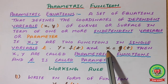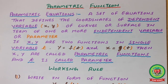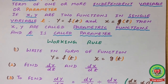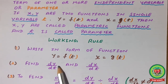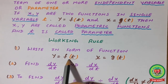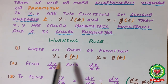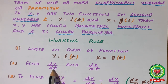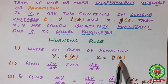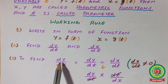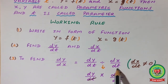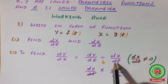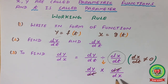Now what is the working rule? It is simple. The parametric function is very easy to solve. First, write the form as y = f(t) and x = g(t). Then differentiate both with respect to the common variable t, giving dy/dt and dx/dt. To find dy/dx, take dy/dt as the numerator and divide by dx/dt — division changes to multiplication with the reciprocal — and we get the value of dy/dx.